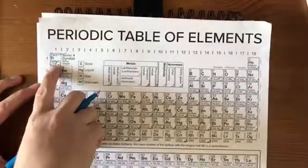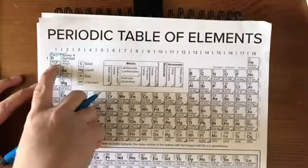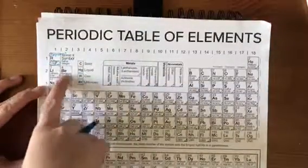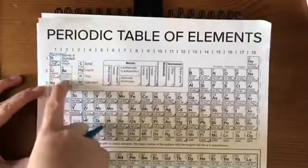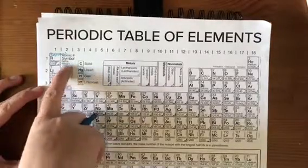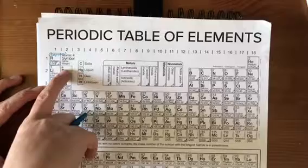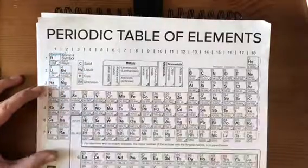So hydrogen would have a mass of one, which means it has one proton, zero neutrons, because neutrons also have a mass of one. Beryllium has four protons, it has a mass of nine, so it has five neutrons.